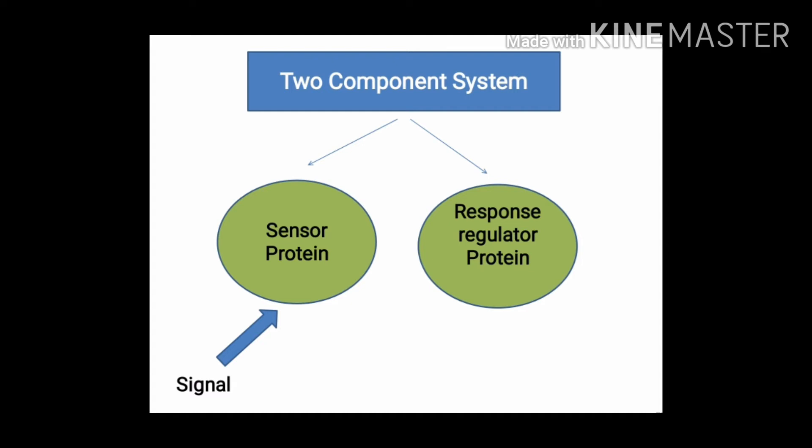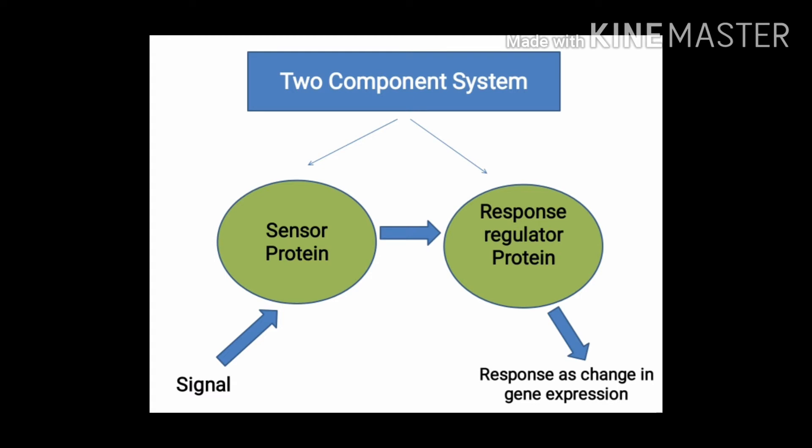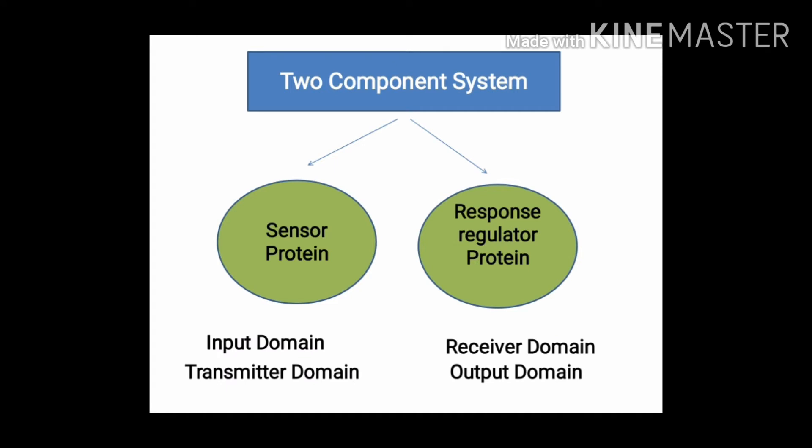This response may be the result of changes in the gene expression pattern of the bacteria. Thus, the response regulator protein is responsible for bringing a particular response as a change in gene expression. The sensor protein consists of two domains — input domain and transmitter domain — while the response regulator protein also consists of two domains named the receiver domain and output domain.